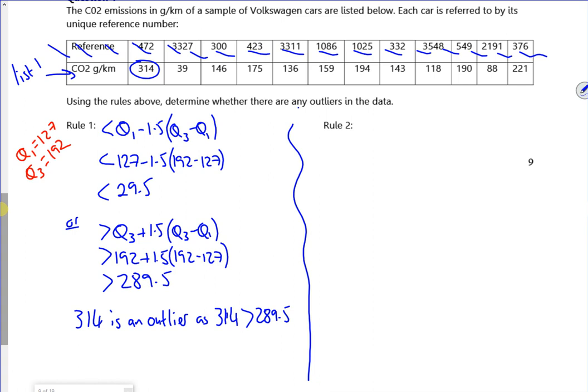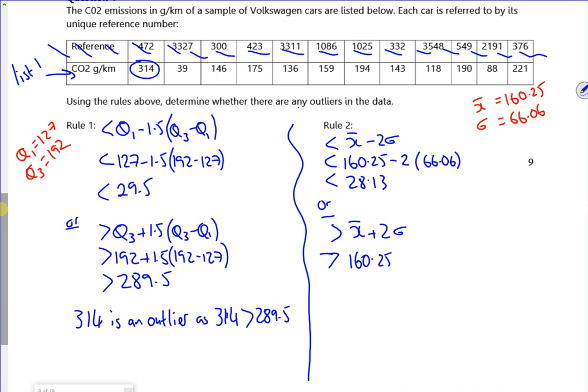Let's try the other way now. So I want less than x bar minus 2 lots of sigma. I got x bar out to be 160.25 and sigma out of 66.06. I didn't, the completed pack did. So I've got 160.25 minus 2 lots of 66.06. The completed pack says 28.13, or greater than x bar plus 2 lots of sigma, so greater than 160.25 plus 2 lots of 66.06, greater than 292.37.